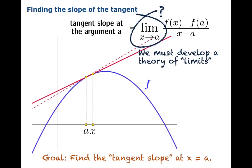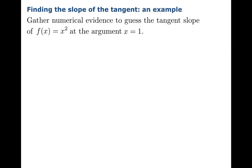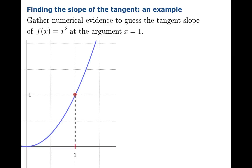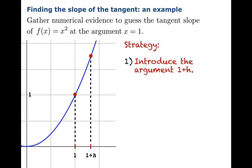But that won't stop us from trying to analyze specific examples. Let's gather numerical evidence to guess the tangent slope of the function f(x) = x² at the argument x = 1. Here we have a graph of this simple function, and there's the argument where we want to find the tangent slope. Our strategy is to introduce the argument 1 + h. Why are we using this 1 + h notation? Well, when you take the difference in the arguments, 1 + h minus 1, you simply get h. So h itself is a nice measure of how far away you are from the argument you care about. As h goes to 0, you're getting closer to your target.